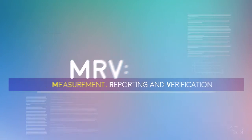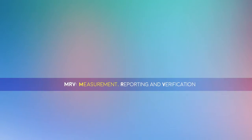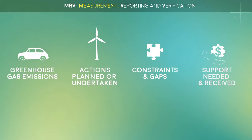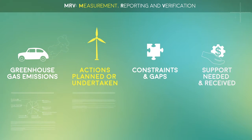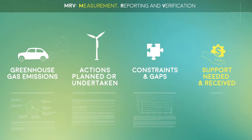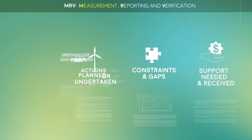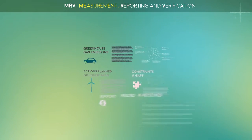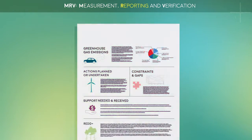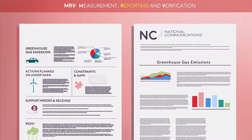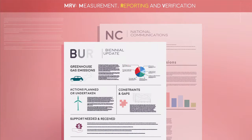So what is MRV? Parties put together information on their greenhouse gas emissions, actions planned or undertaken, constraints and gaps and any support needed and received. This information becomes the basis for two kinds of reports that developing countries prepare and submit: National Communications and Biennial Update Reports, also known as BURs.